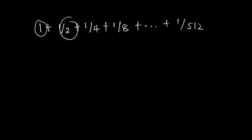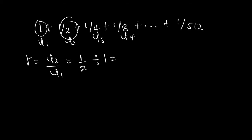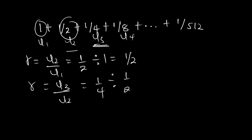Let's consider the example: 1 + 1/2 + 1/4 + 1/8 + ... Let u1 = 1, u2 = 1/2, u3 = 1/4, u4 = 1/8. The common ratio r = u2/u1 = (1/2)/1 = 1/2. Let's verify: u3/u2 = (1/4)/(1/2) = 1/2 as well. Since all terms give the same common ratio, this confirms it is a geometric progression.